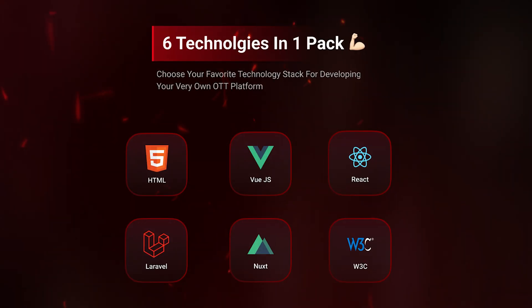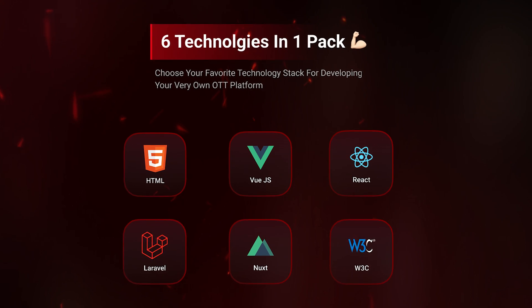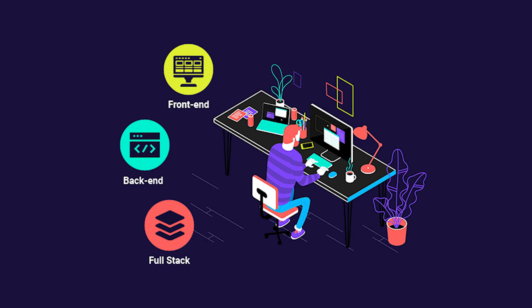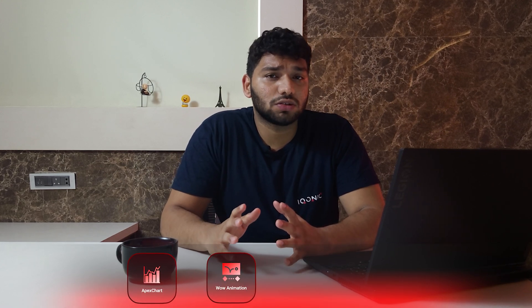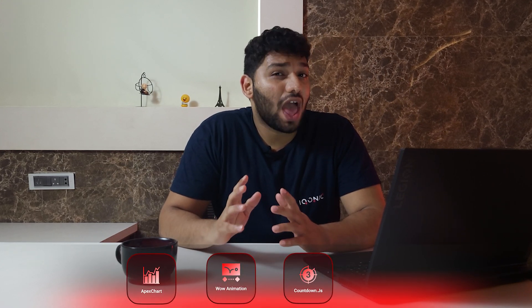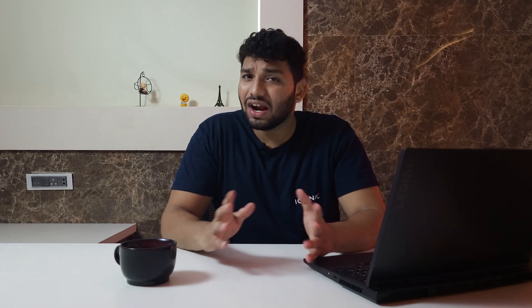Streamit is a high-level product with six technologies in one pack: HTML, Vue.js, React, Laravel, Nuxt, and W3C — which would be steroids for hardcore developers. And it has additional key features that developers can't resist, like Apex Chart, Vue Animation, Countdown.js, Bodymovin.js, RTL, and much much more.